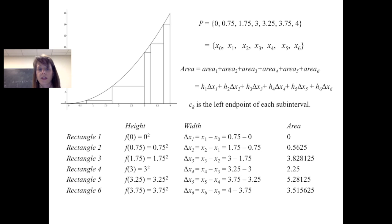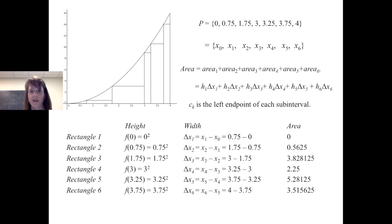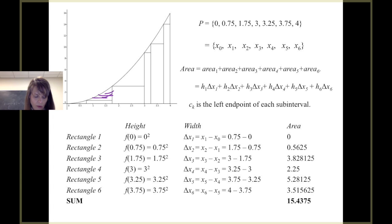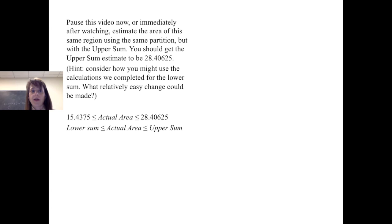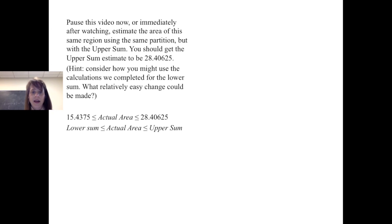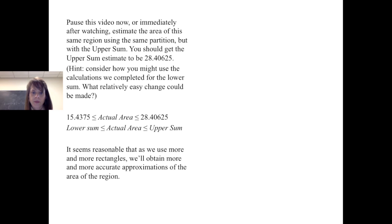Approximating the area bounded by y equals x squared, the x-axis, and the line x equals 4 using the lower sum with these six rectangles, we get a total of 15.4375. We know this is significantly less than the actual area because we can see gaps between the rectangles and the curve. Try estimating the area using the same partition but with the upper sum — you should get 28.40625. The actual area lies between the lower and upper sums, and as we use more and more rectangles, we get more and more accurate approximations.